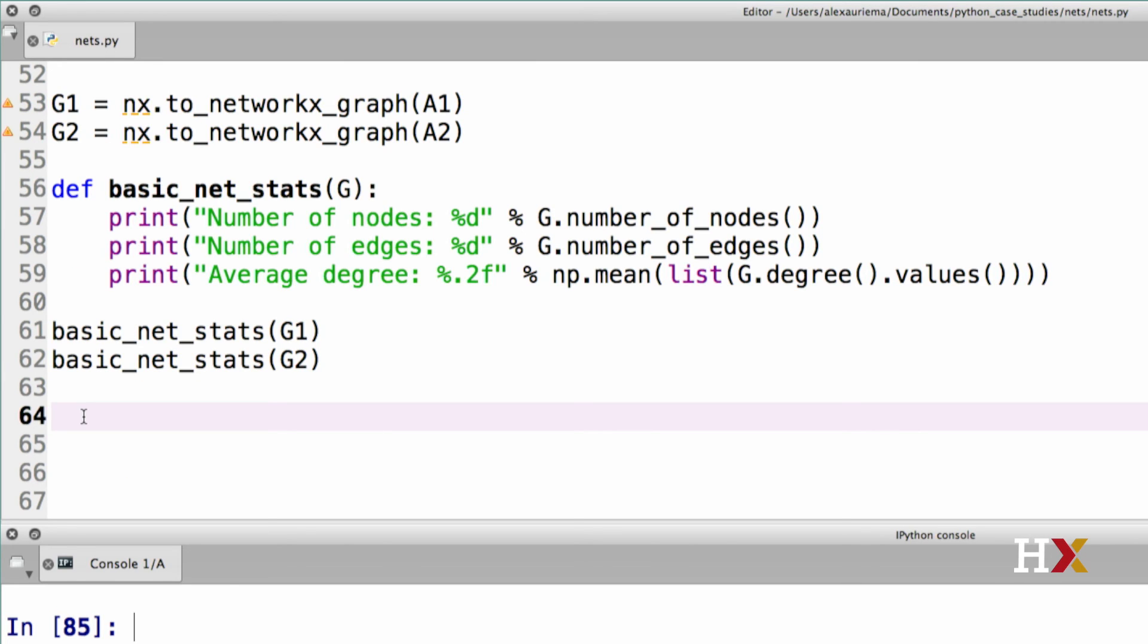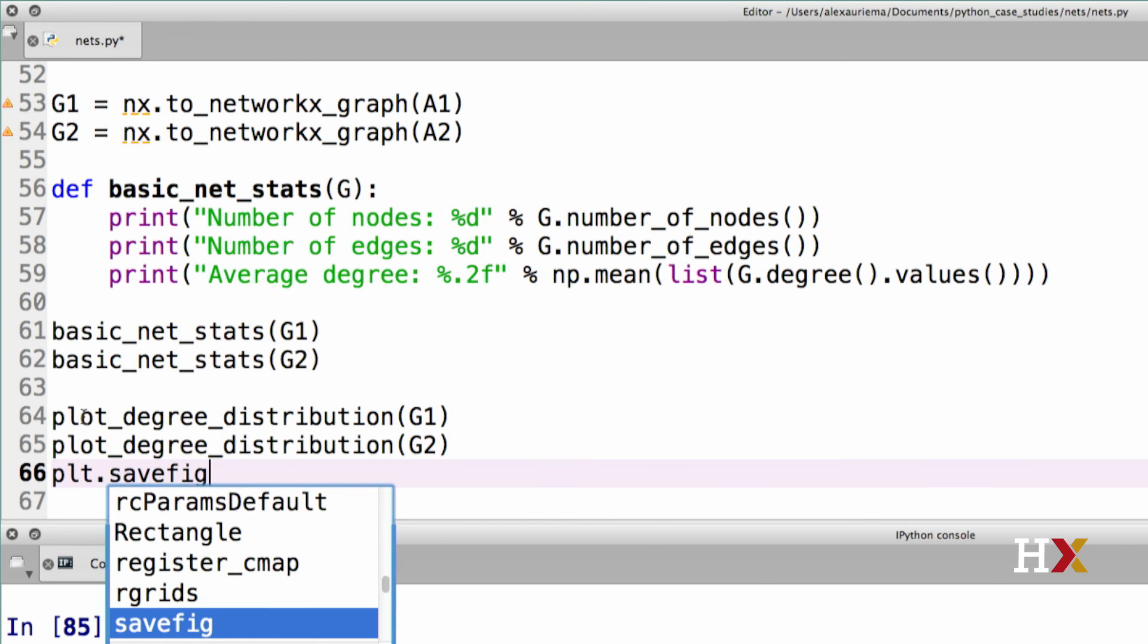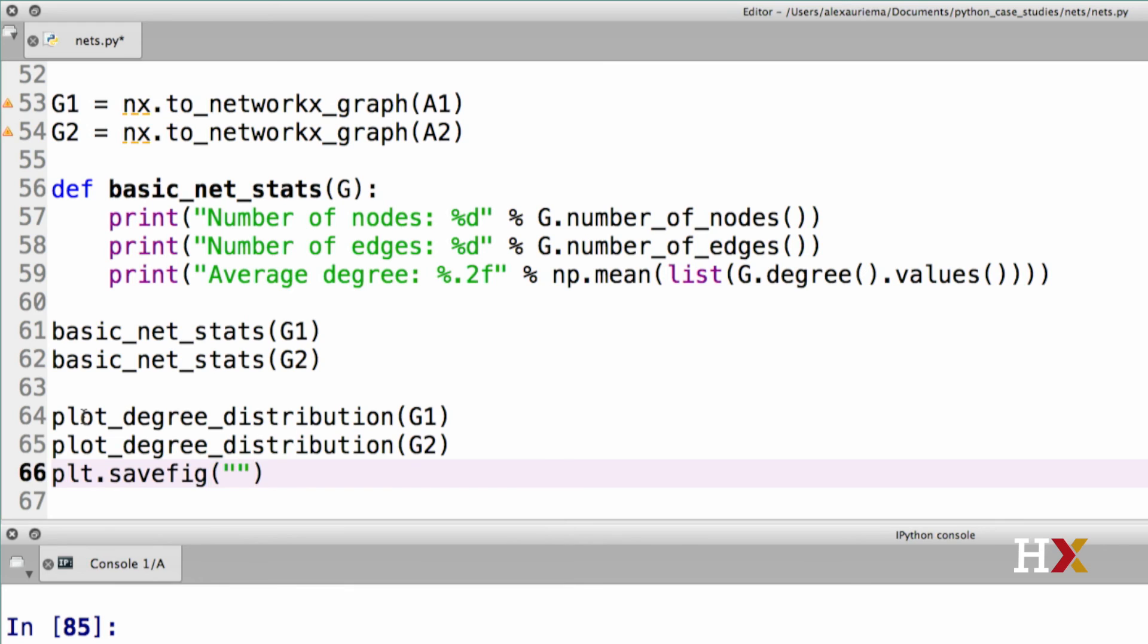Let's then plot the degree distribution from these two villages. First G1, then G2. And we'll have to save this as village-hist.pdf.